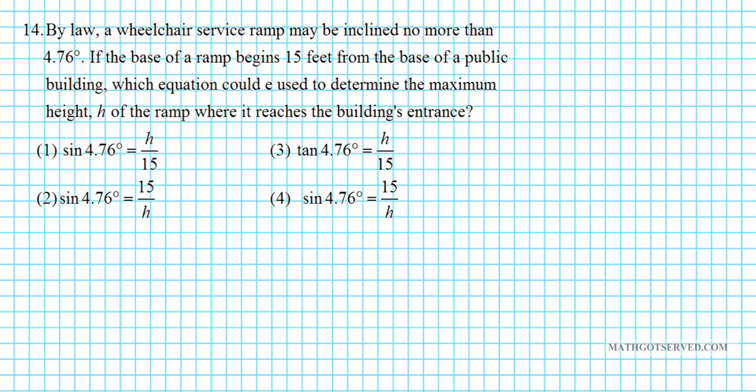Let's take a look at number 14. By law, a wheelchair service ramp may be inclined no more than 4.76 degrees. If the base of a ramp begins 15 feet from the base of a public building, which equation could be used to determine the maximum height h of the ramp where it reaches the building's entrance?